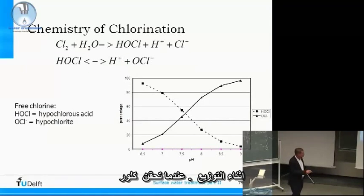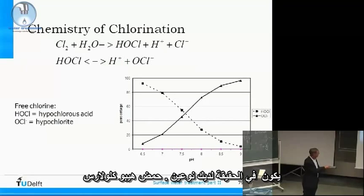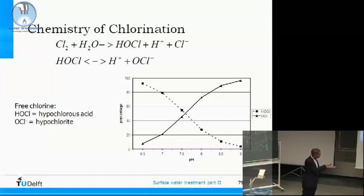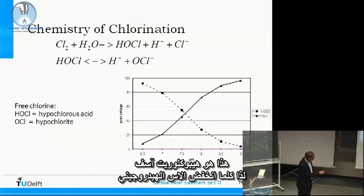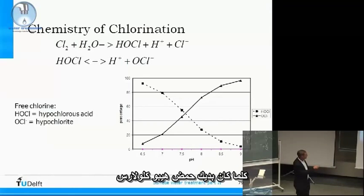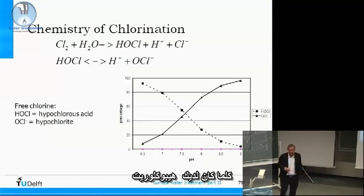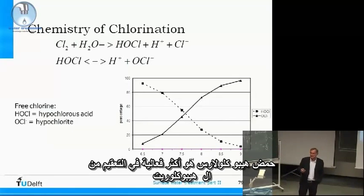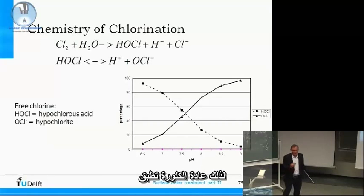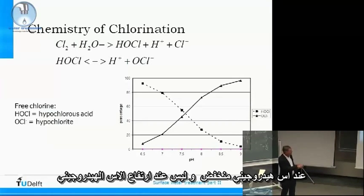When you dose chlorine, you have two species: hypochlorous acid and hypochlorite. The lower the pH, the more hypochlorous acid you have; the higher the pH, the more hypochlorite you have. Hypochlorous acid is more effective for disinfection than hypochlorite, so normally chlorination is applied at lower pH, not at high pH.